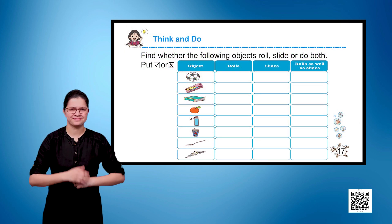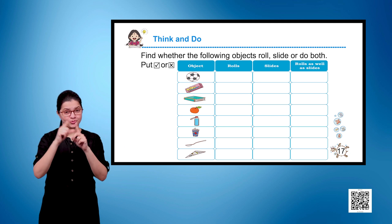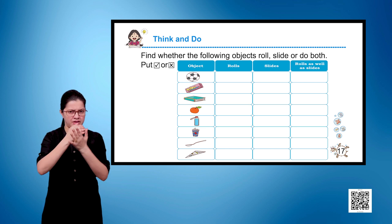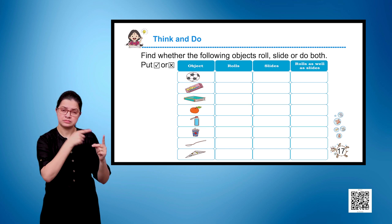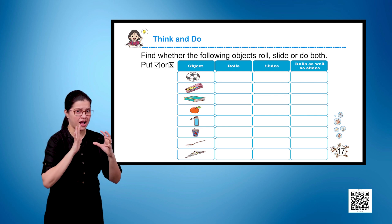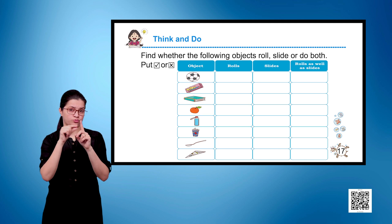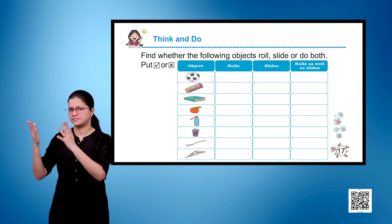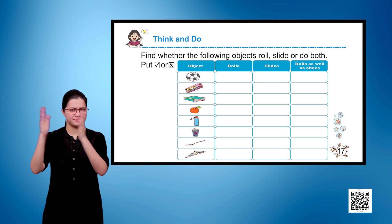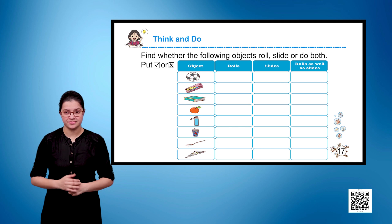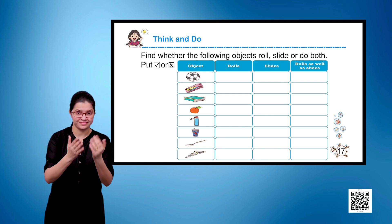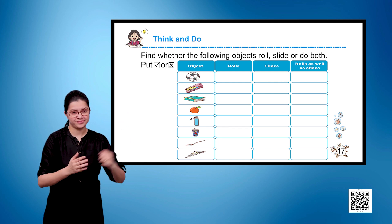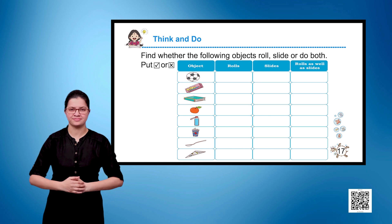Think and do. Find whether the following objects roll, slide, or do both. Put tick or cross in the given boxes. Here we have a table with four columns and eight rows. The columns are: objects, rolls, slides, and rolls as well as slides.